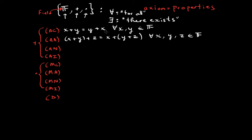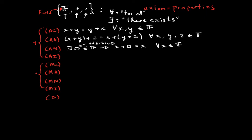There exists a zero in our field such that for any element x, adding zero to it still gives x — this is the additive identity. Additive inverse states that for all x in F, there exists a negative x also in the field, such that x plus negative x equals zero, the additive identity.